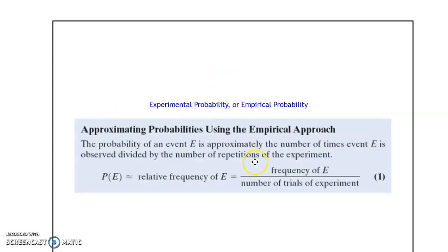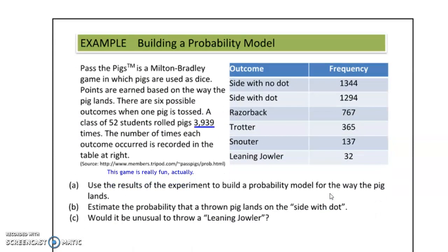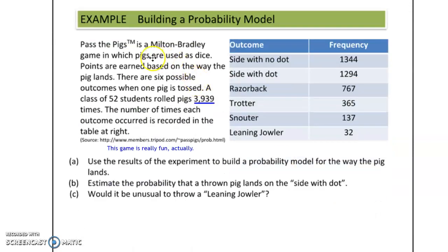Empirical or experimental probability is simply probability that is based on experiments you have already done. You've already done the experiments and we're trying to figure out what the probability is based on that. In other words, the relative frequency of any event E is the frequency of it happening in the experiments divided by the number of trials of the experiment. For example, if you were to play Pass the Pigs — which is a super fun game — it's a game in which you roll two plastic pigs.